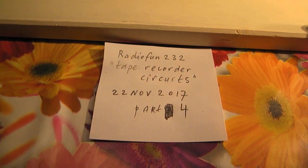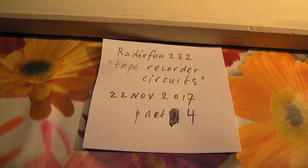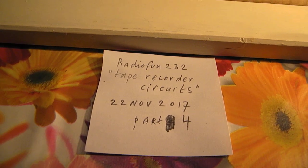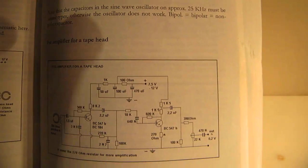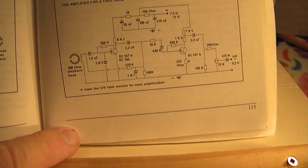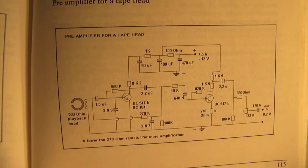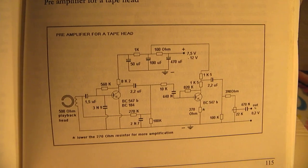Part 4 from the video series about tape recorder circuits. This is the pre-amplifier circuit that's very usable to make a tape head pre-amplifier.